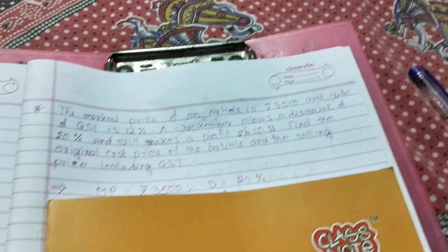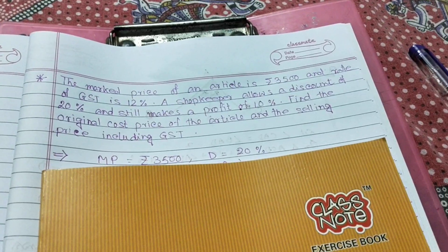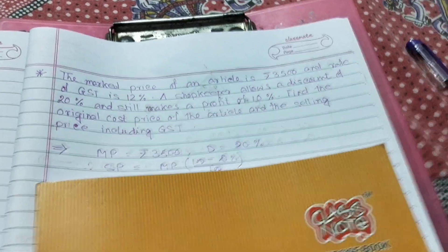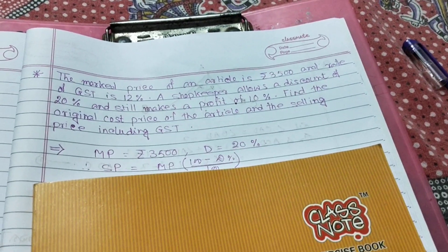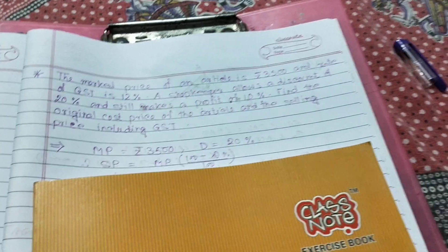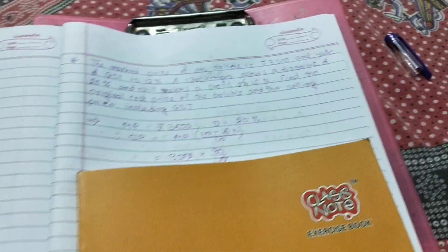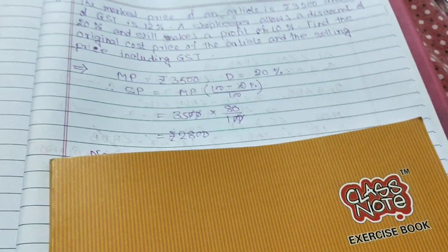Now mark price is given Rs 3500 and discount is 20%. So if we calculate SP equal to mark price into 100 minus discount percent by 100, we are getting the SP as Rs 2800.